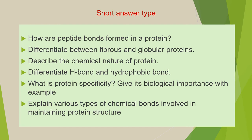Next question is: describe the chemical nature of protein. Next is: differentiate H bond and hydrophobic bond. Next question is: what is protein specificity? Give its biological importance with an example. Next question is: explain various types of chemical bonds involved in maintaining protein structure.